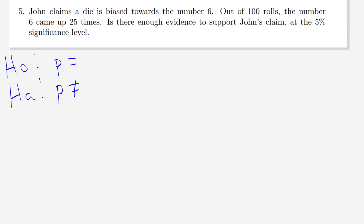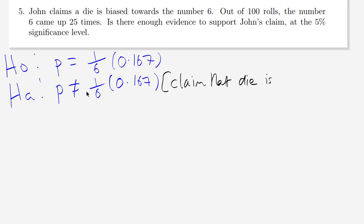Start with our null and alternate hypothesis — we're dealing with proportions, so p equals and p does not equal. For a die, the number six should come up one out of six times, so the proportion should be 1/6, which as a decimal is 0.167. The null hypothesis is p equals 1/6 and the alternate is p not equals 1/6. John is claiming the die is biased — if it were fair the proportion would be 1/6, if unfair it would be something other than 1/6. So the claim that the die is biased is in the alternate hypothesis.